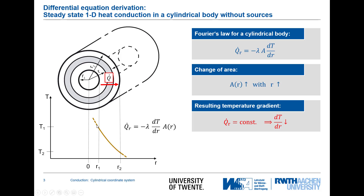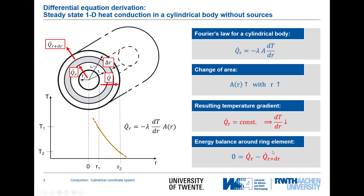We know from the plane wall that this would be a straight line, but due to the increasing area the temperature gradient dT/dr decreases gradually with increasing radius, giving a concave shape to the temperature profile. For the derivation of the energy equation we consider the heat flux Q_r entering the control volume and the heat flux Q_{r+dr} leaving it. The energy balance for steady state gives: 0 = Q_r − Q_{r+dr}.